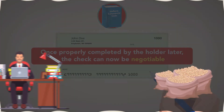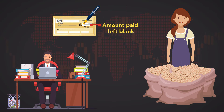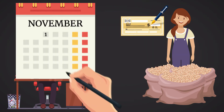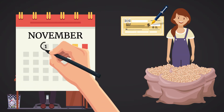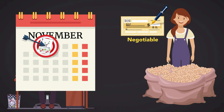For example, Allen writes a check to Doris for a shipment of soybeans, but the amount to be paid is set by whatever the soybean price is on a given day in the future, according to an independent financial monitor of soybean prices. Accordingly, he authorizes Doris to complete the check herself by reference to that future price on a given date. The check is negotiable.